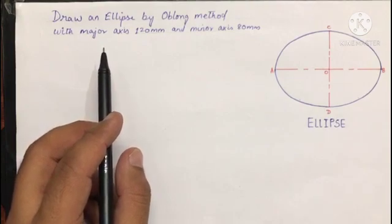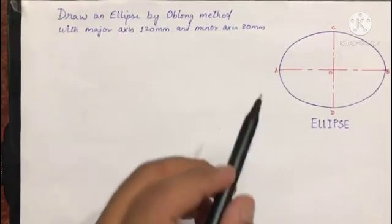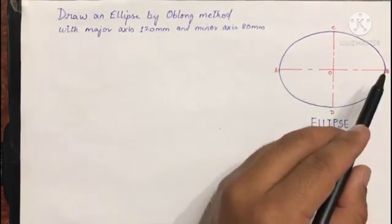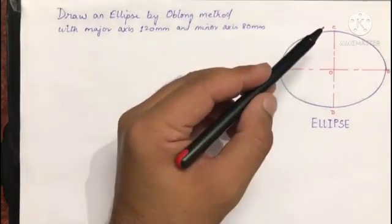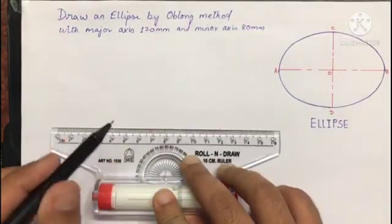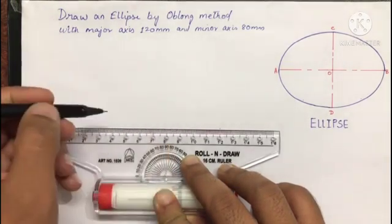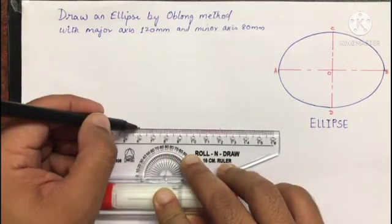So first we draw major axis AB and minor axis CD with center O. The major axis measures 120 millimeter, 60 millimeter on each side of center.